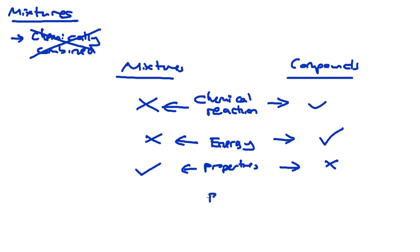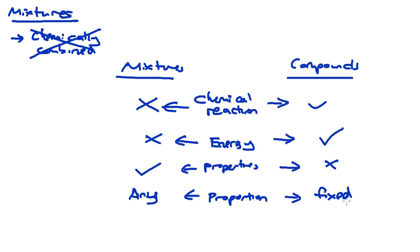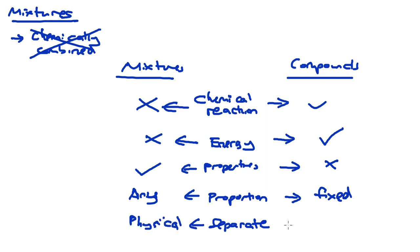The next difference is in terms of the proportion of how they can be mixed. For mixtures, you can have any proportion, whereas for compounds you have to have a fixed amount of certain elements before they can be combined. The last difference is how you can separate the items. For mixtures, they can be separated through physical methods, and for compounds you need chemical reactions to separate them.